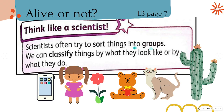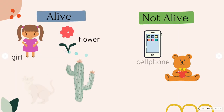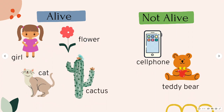Is it alive or not? You can see here a cell phone, a girl, flower, teddy bear, a cat, and cactus. Now, how will you group these things? Scientists often try to sort things into groups. We can classify things by what they look like or by what they do. We can group the girl with the flower and also the cat and cactus as alive. How do you know that they belong in one group — the alive group? Because all of these are living things. They breathe, move, reproduce, and sense things around their environment. How about the cell phone and teddy bear? Yes, they are not alive, simply because they cannot do those things which alive things can do.